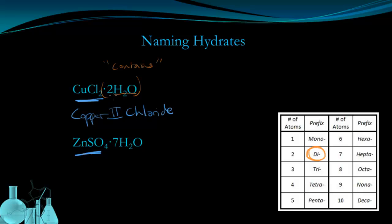So for the name, because there are two waters, we say it's copper 2 chloride dihydrate. The hydrate indicates that there are water molecules contained in this ionic salt. And the di tells us that there are two water molecules contained. So the full name for this is copper 2 chloride dihydrate.